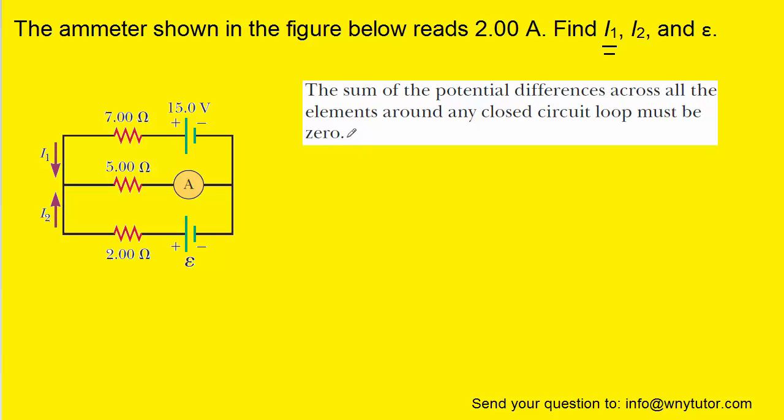You can certainly pause the screen here and read this statement over a couple of times, but it does say that the sum of the potential differences across all the elements around any closed circuit loop must equal zero.